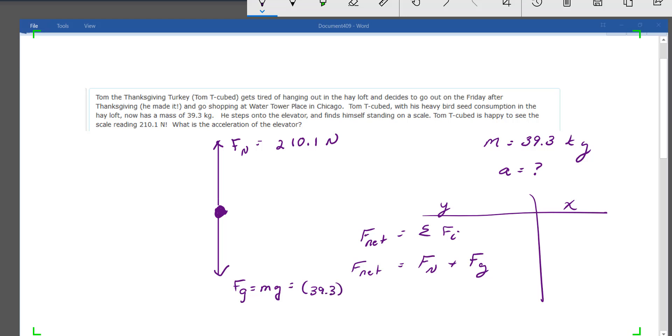Fg I'm going to calculate using the 39.3 and negative 9.8, and I'm going to get that number of negative 385.14 newtons. I'm going to plug in my numbers to find the net force, very similar to the last problem, only different numbers. And I'm going to get a net force of negative 175.04 newtons. Plug that into F net equals ma using the mass of Tom T. Cube, and I get an acceleration of negative 4.45 meters per second squared. In this case, we have a negative acceleration.